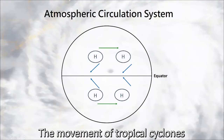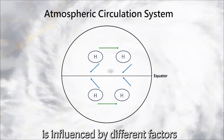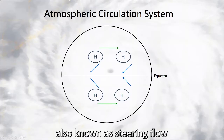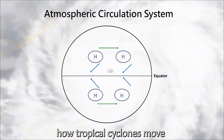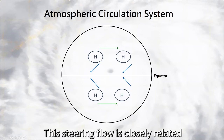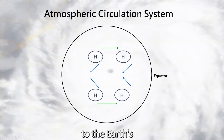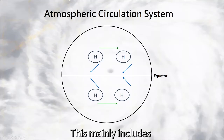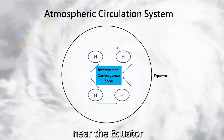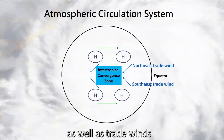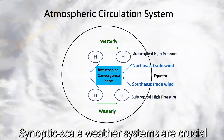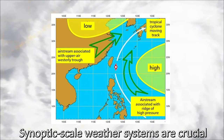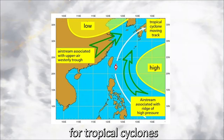The movement of tropical cyclones is influenced by different factors. The environmental wind, also known as steering flow, is the most critical factor in determining how tropical cyclones move. This steering flow is closely related to the Earth's atmospheric circulation system, which mainly includes the intertropical convergence zone near the equator, as well as trade winds, subtropical high pressures, and westerlies in both hemispheres. Synoptic-scale weather systems are crucial in providing the steering flow for tropical cyclones.